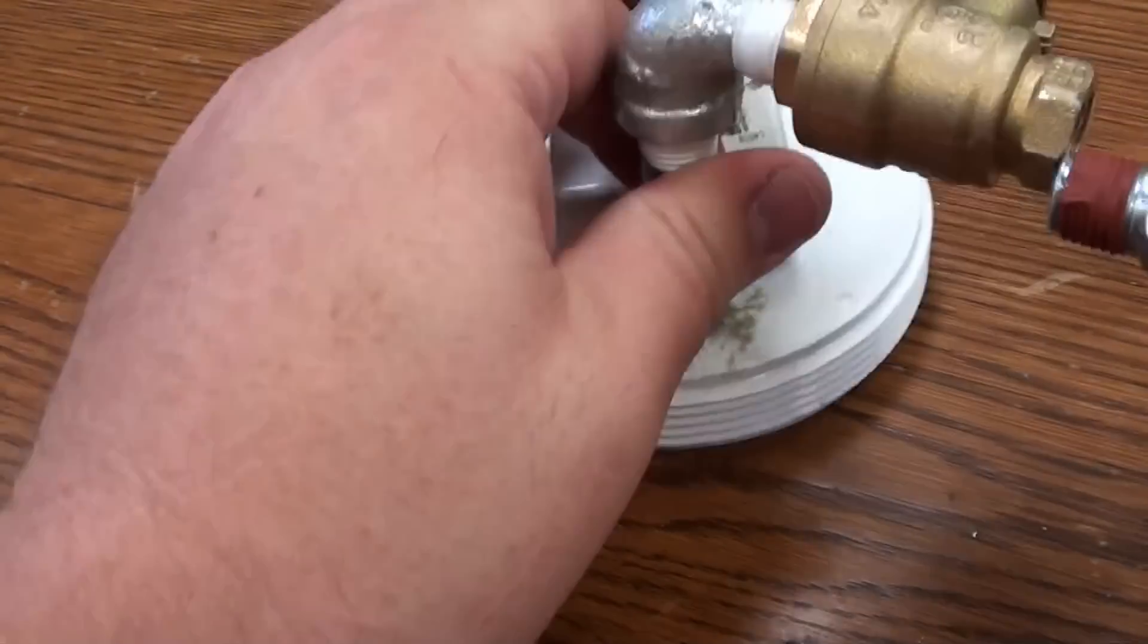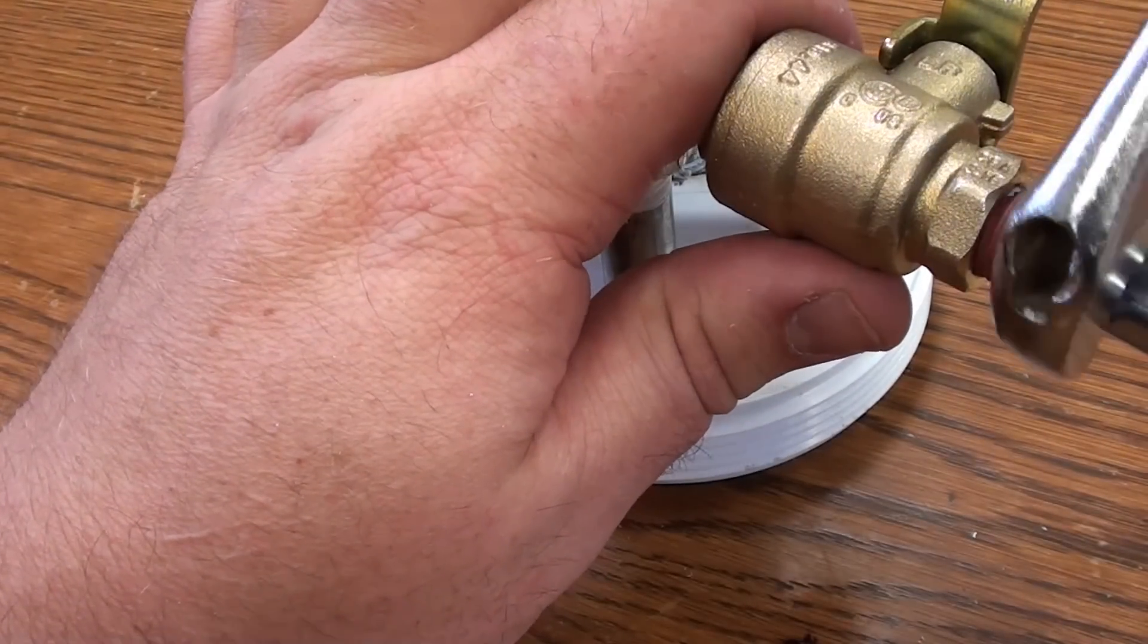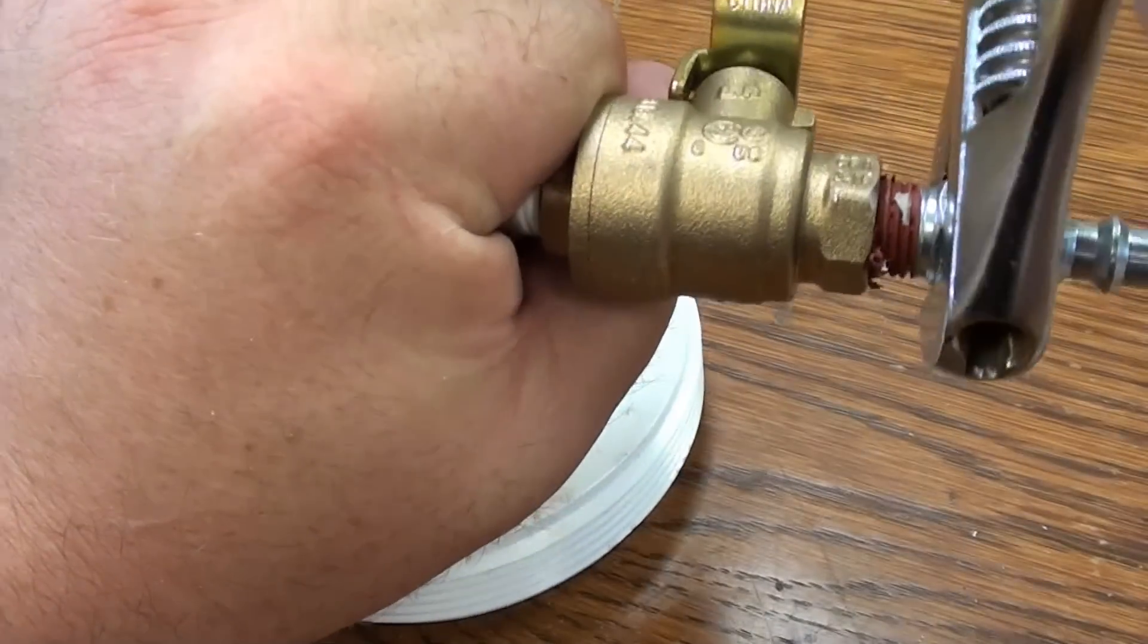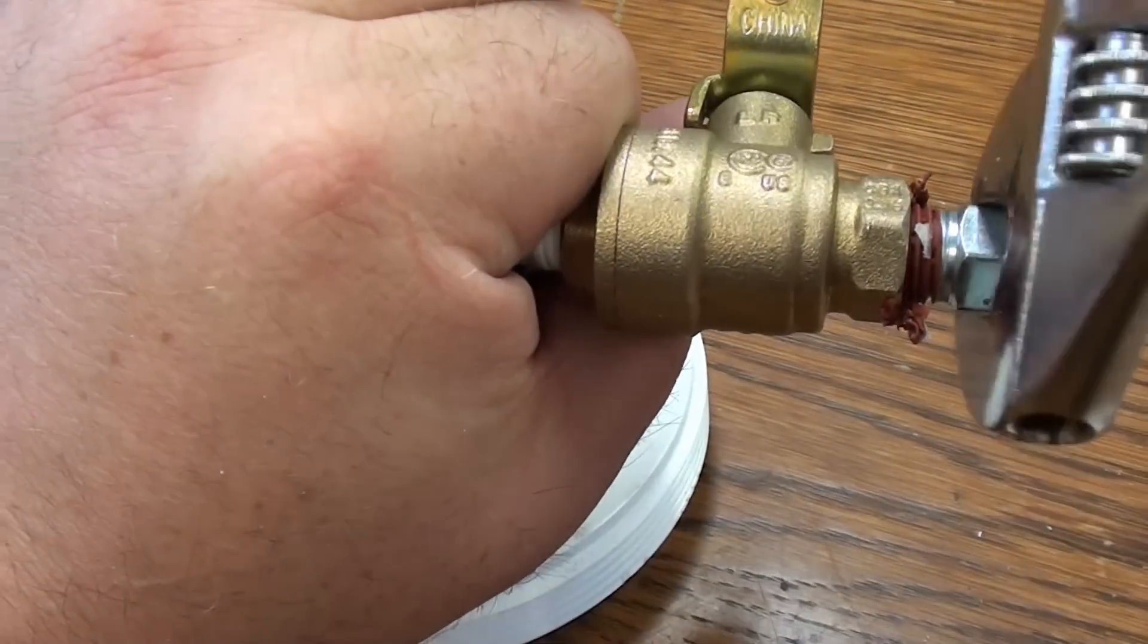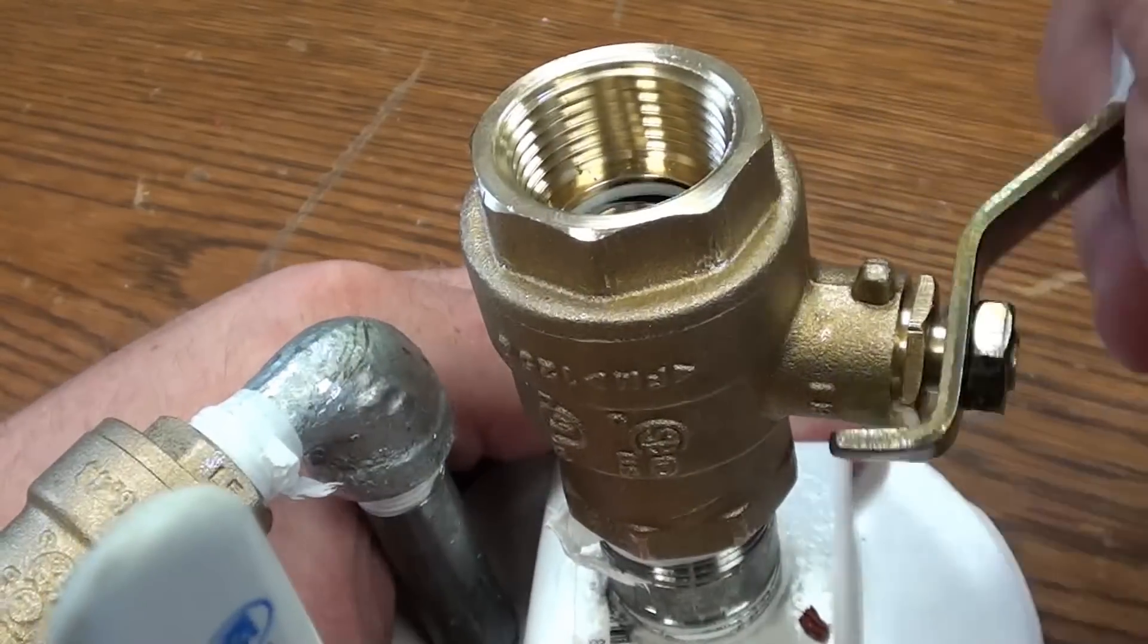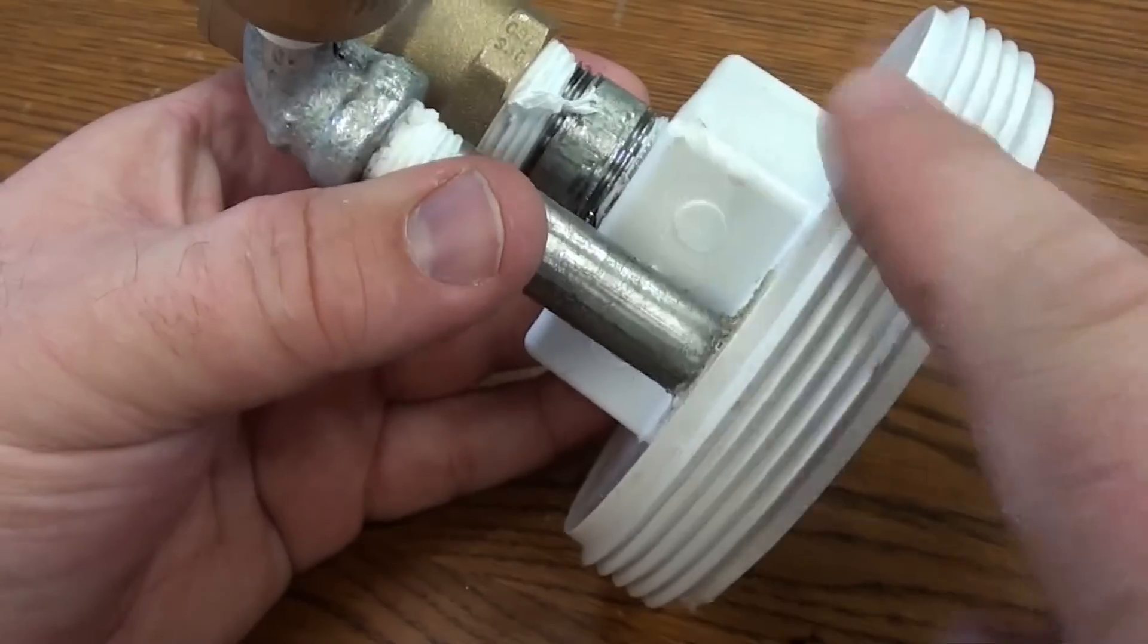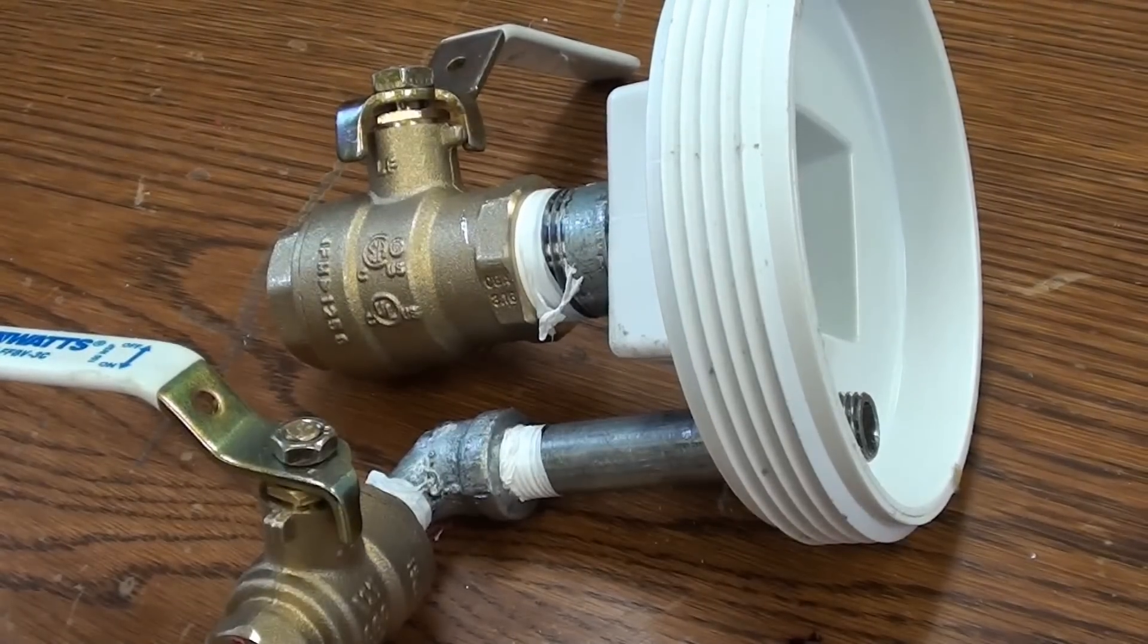Wow, look at that, it has threads. Alright, so that's our dump valve and that's our fill it up valve. Now we just need to put a bunch of tape on here and screw it into the end of the cannon.